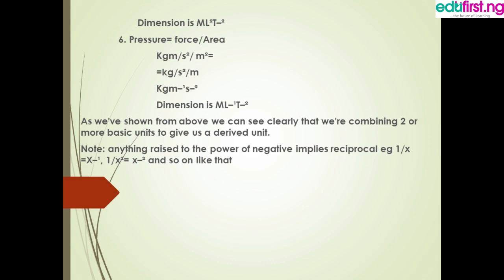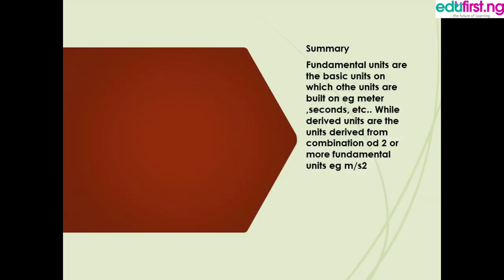And raise to the power minus something is the same as one over that quantity. For pressure, we are having kilogram per meter per second squared, meaning kilogram divided by meter multiplied by divided by second squared. So anything raised to the power minus 1 equals 1 over that thing. In summary, fundamental units are the basic units — the units for the fundamental quantities.